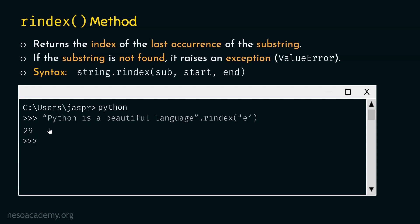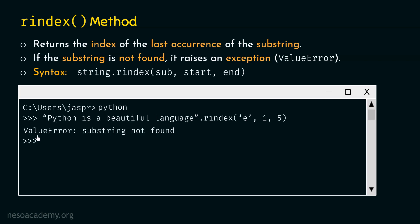Let's see one more example: 'python is a beautiful language'.rindex('e', 1, 5). This means we need to find the character 'e' within the range starting from index 1 (letter 'y') and ending at index 5 (letter 'n'), so within 'y', 't', 'h', 'o', 'n'. As we can observe, the character 'e' is not available within this range. Hence, we will get the error message: ValueError — substring not found.